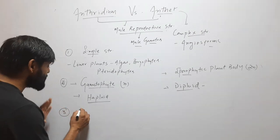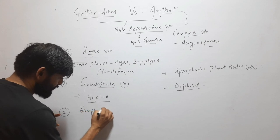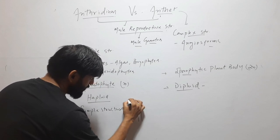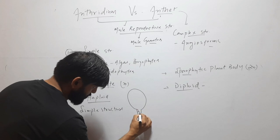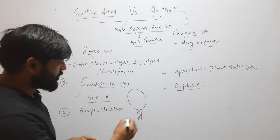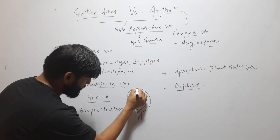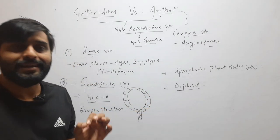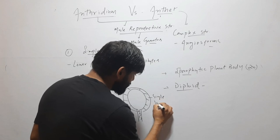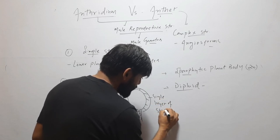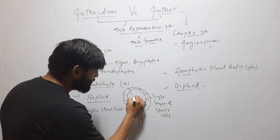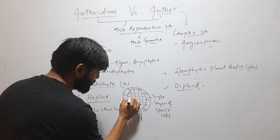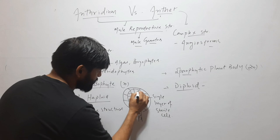The antheridium is a very simple structure in which a single stalk is present — the stalk is multicellular. On that stalk, there is usually a globular structure, and it is covered by a single sterile jacket, that is, a single layer of sterile cells. Inside that jacket is the sporogenous tissue.